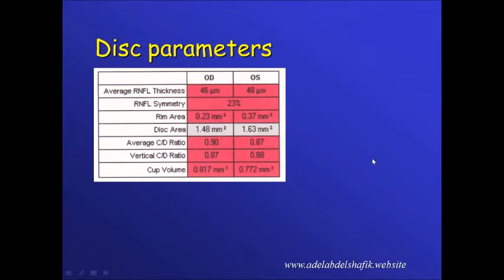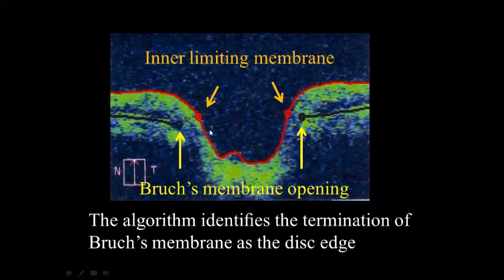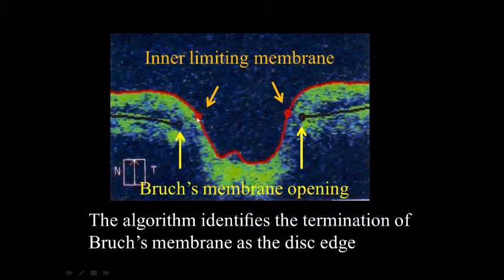Regarding disc parameters, you must check that the Bruch's membrane opening is correctly located. After locating the Bruch's membrane ending, the machine finds the short distance between the Bruch's membrane endings and the internal limiting membrane to calculate the amount of neural tissue present.